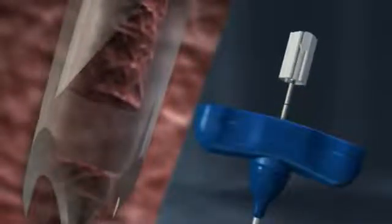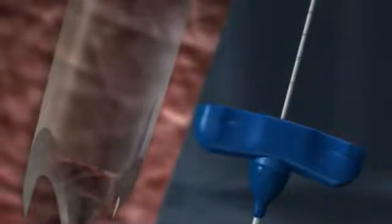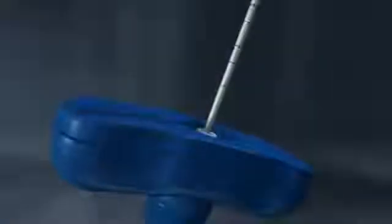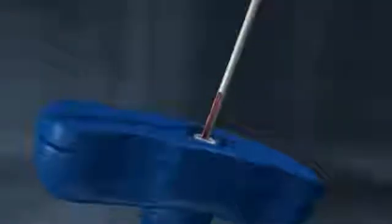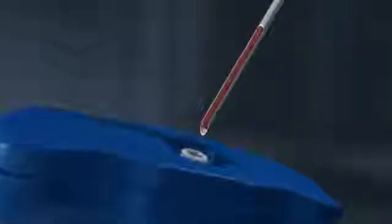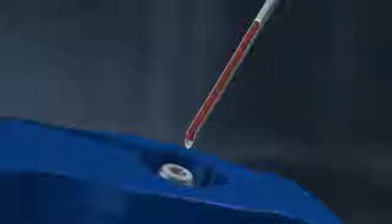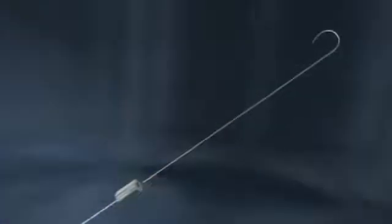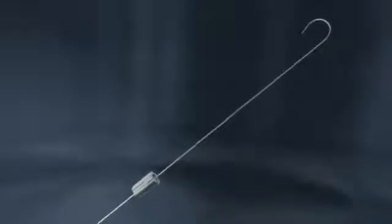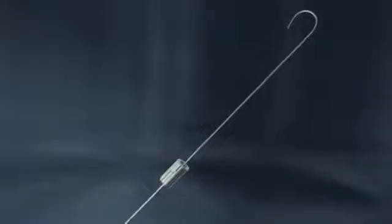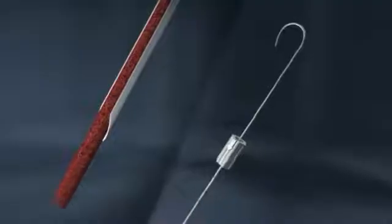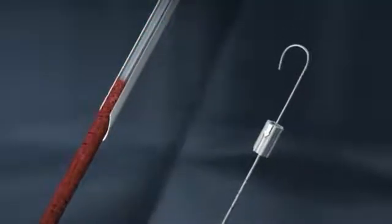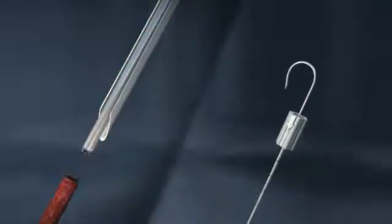The marrow acquisition cradle is then withdrawn from the cannula. The specimen's trephine rests in the trough of the marrow acquisition cradle, which securely holds the sample, reducing the chance of it getting dislodged accidentally. The sample is ejected from the cradle by advancing the support rod through the proximal end of the cradle. Ejecting the sample from the distal portion of the marrow acquisition cradle reduces the risk of dangerous needle sticks that are associated with normal specimen retrieval.